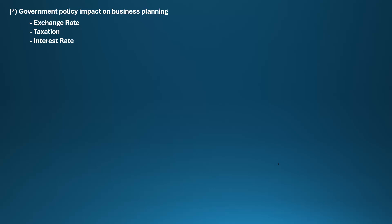Direct taxes are taxes placed on a person or company directly, where they cannot pass it on to someone else. Indirect taxes are those where one person can pass the tax to someone else. For example, value added tax: the government imposes it on companies, and companies simply add that VAT to the price of the product and sell it to the end customer — so ultimately only the end customer pays the tax. Remember: direct tax cannot be passed on; indirect taxes can be passed on to someone else.